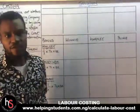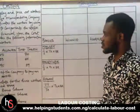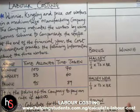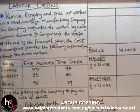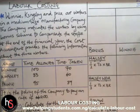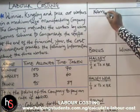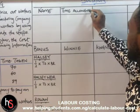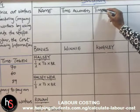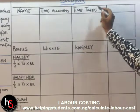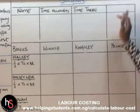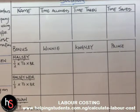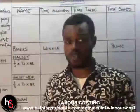I have a format on the board to make it easier for us to answer this question. Before we solve, we first need to determine the time saved. So in our table we have the name, the time allowed, the time taken, and the time saved — that is the last column we are going to have.